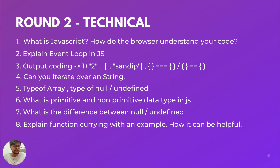He asked: can you iterate over a string? I said yes, just like an array. He also asked about typeof array, typeof null, and typeof undefined, with a few more typeof questions attached. After those, he asked about primitive and non-primitive data types in JavaScript. The seventh question was the difference between null and undefined — you need to briefly explain what null is, what undefined is, and what the differences are between them.